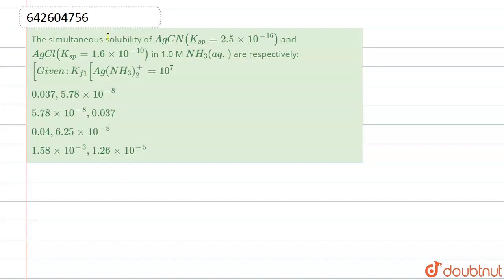Hello everyone, so the question is, the simultaneous solubility of AgCl having Ksp equals to 2.5 into 10 to the power minus 16 and AgCN having Ksp 1.6 into 10 to the power minus 10 in 0.1 molar NH3 aqueous are respectively given. It is asking for simultaneous solubility. Let us see what we can do.